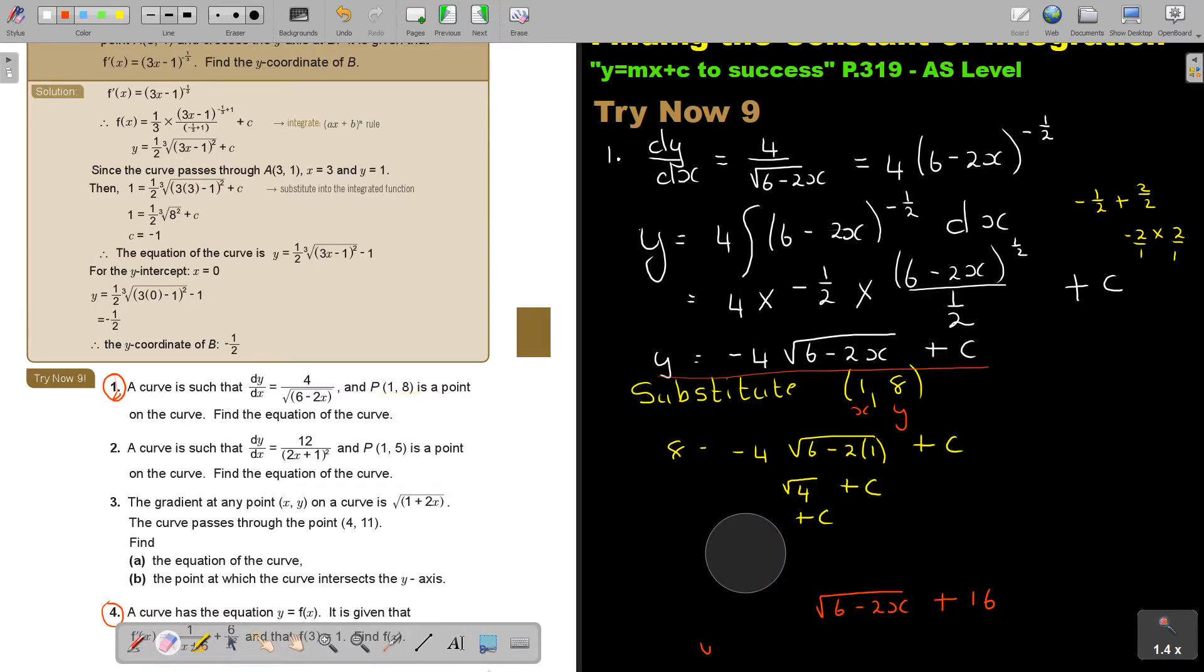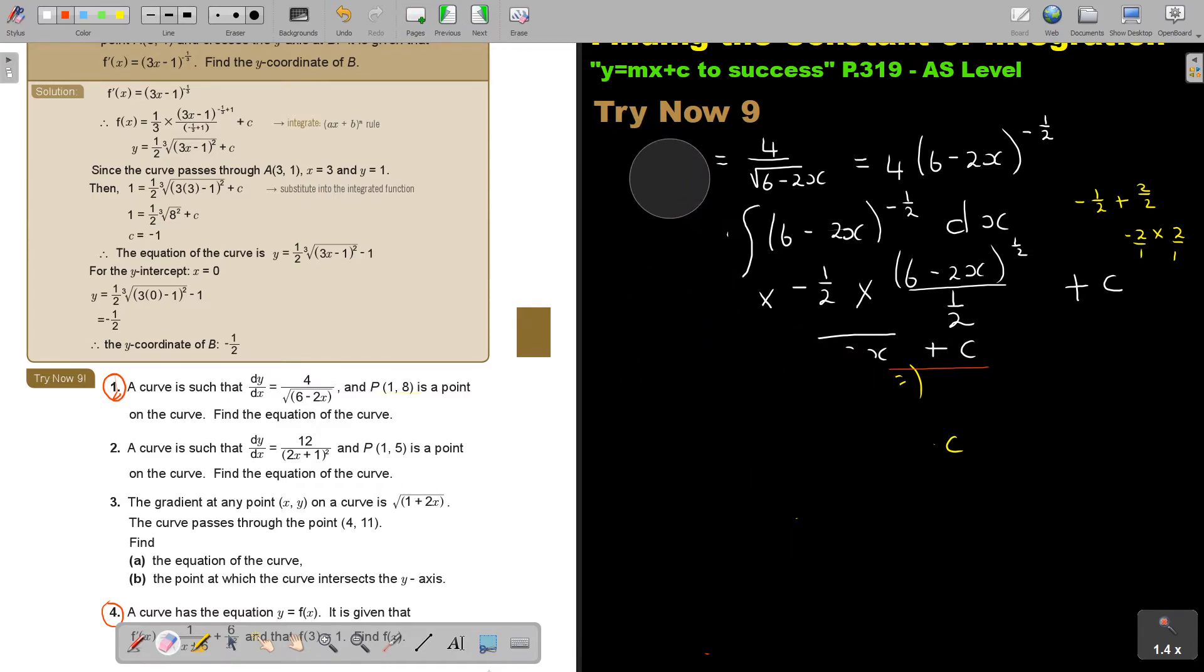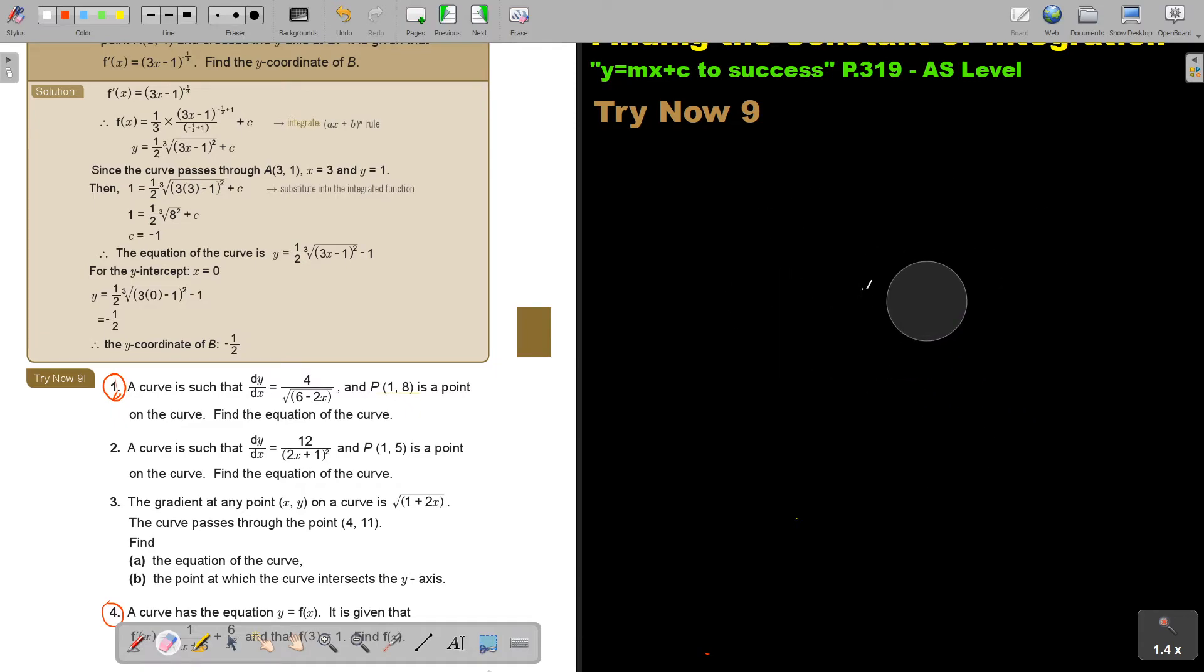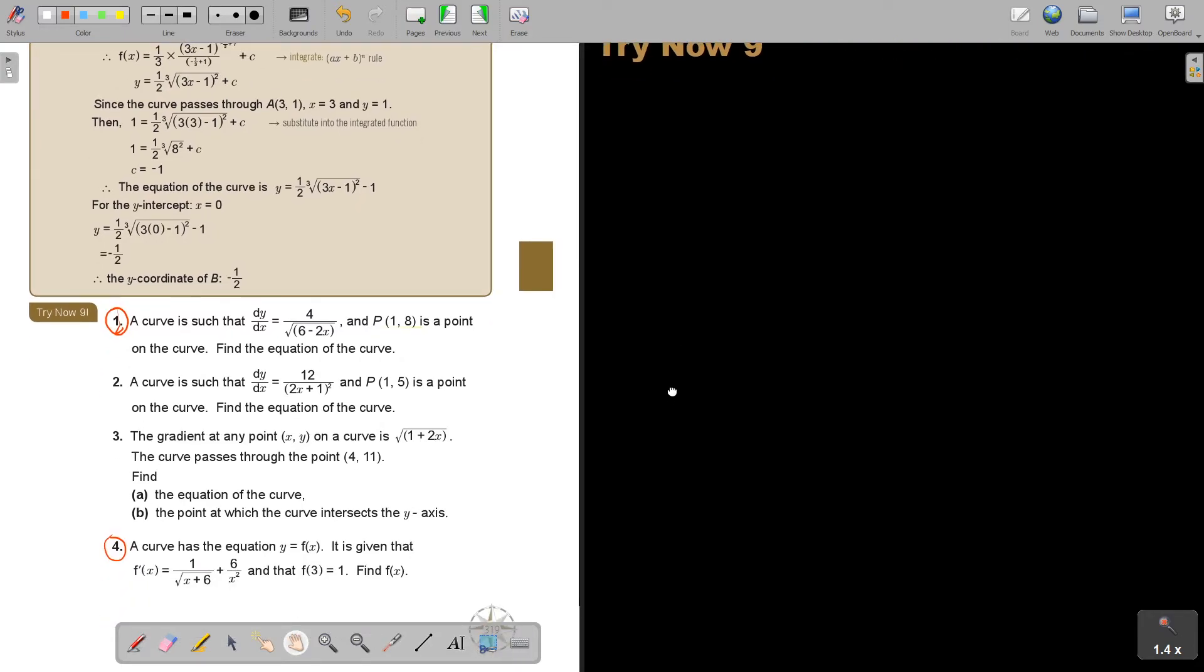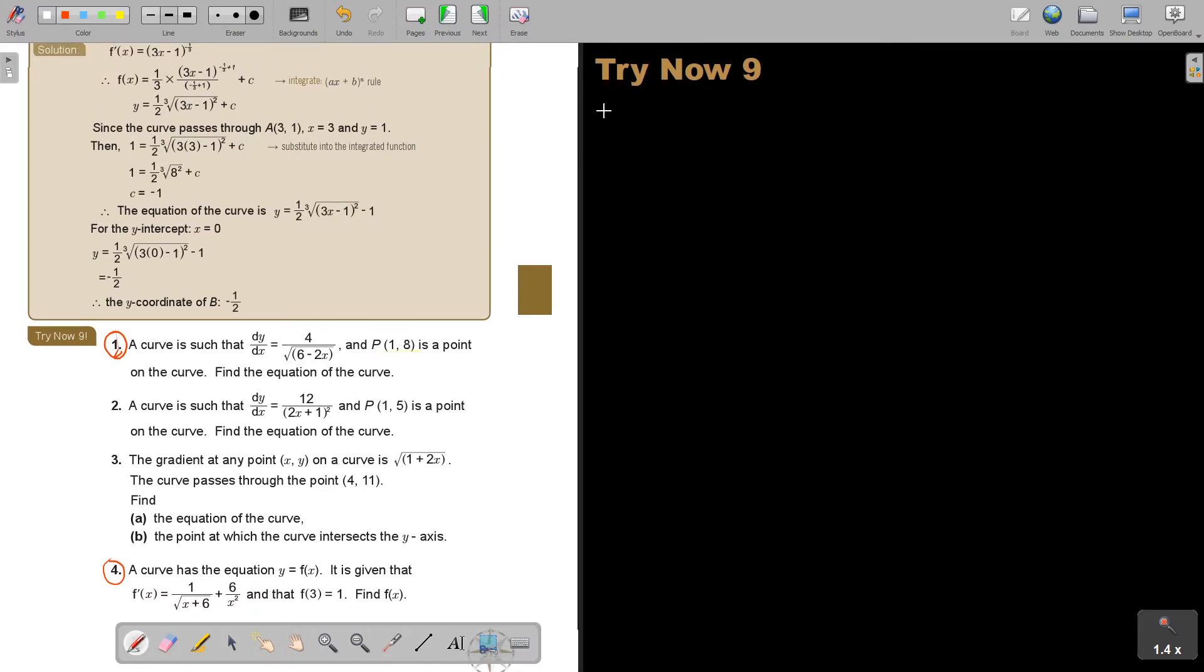Let's do number 4. Again, I'm going to make space. And I'm going to move it up a little bit. And this is going to be number 4 now. So the curve has equation Y equals F(x). It's given that this is the differentiated function. And this is just why I gave you this one. Because this is just a very nice way of writing the coordinate point. It's just saying that if the value of X is 3, then the value of Y is 1.